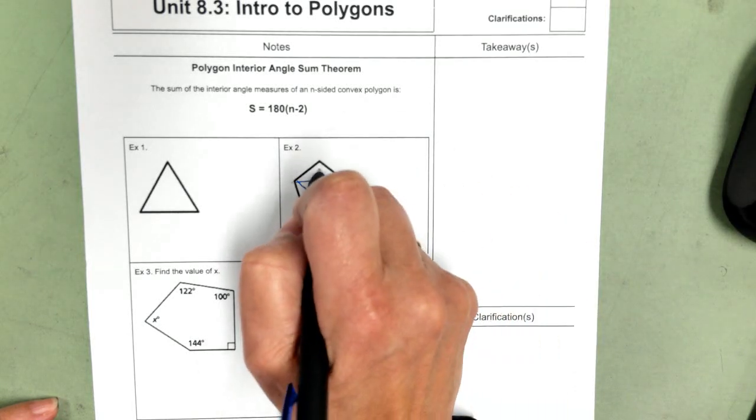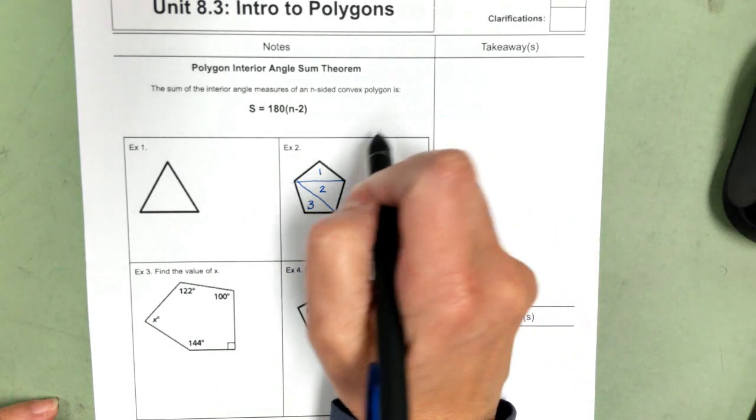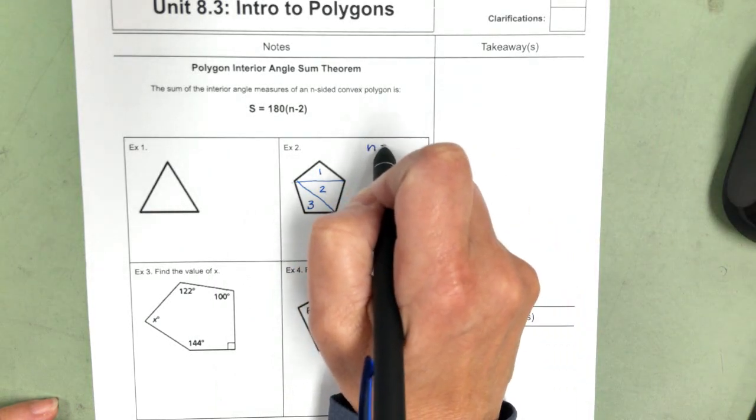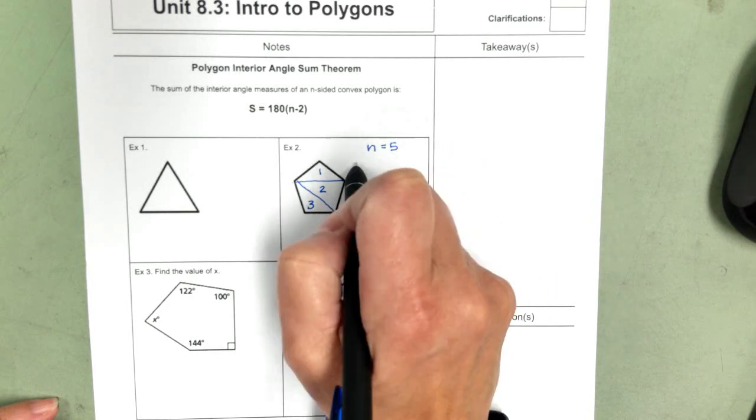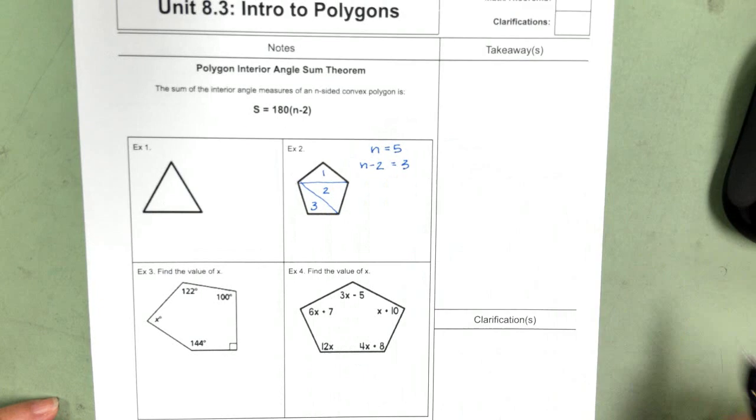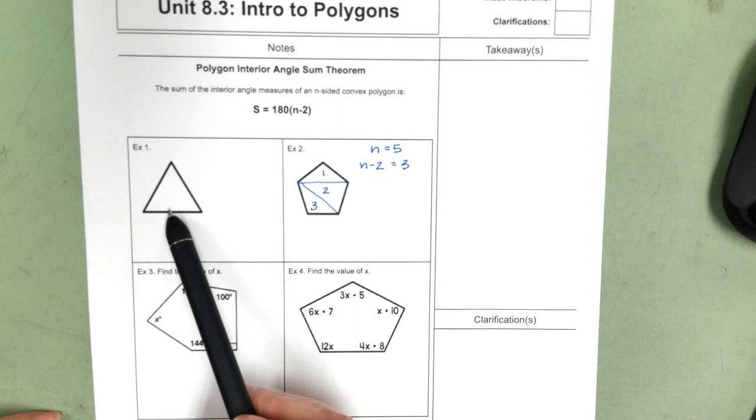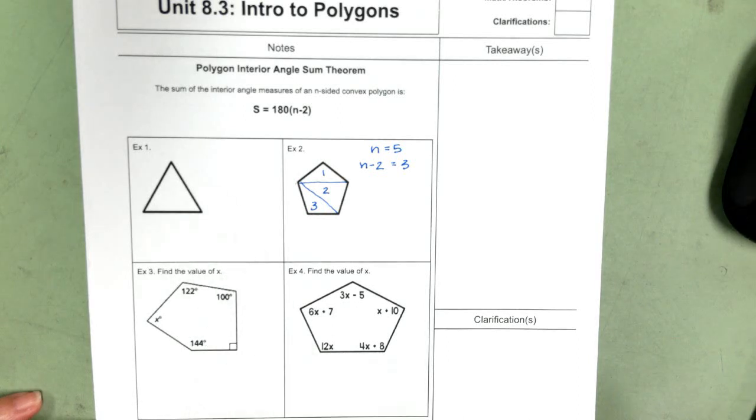Notice I have one, two, three triangles. I have five sides because it's a pentagon. And if I count up the triangles, I get three. And this is going to be true no matter what sided polygon you have other than, of course, your triangle.